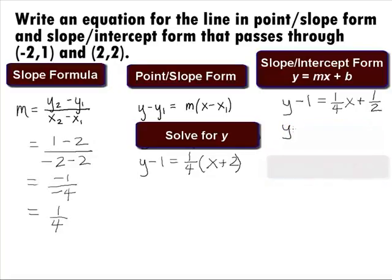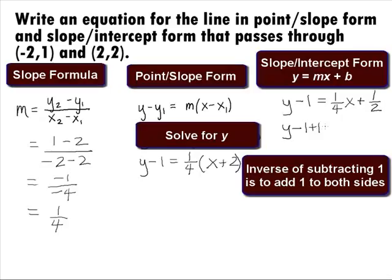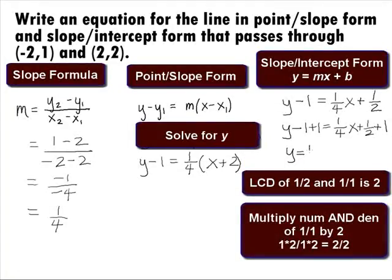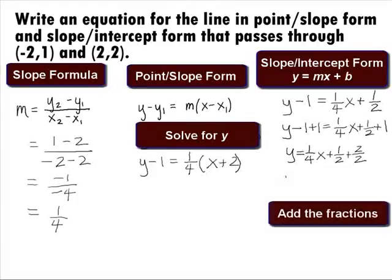Doing the inverse of subtracting 1, we want to add 1 to both sides, which will give us y minus 1 plus 1 equal to 1 fourth x plus 1 half plus 1. Rewriting the 1 as 2 over 2 so that we have a common denominator, we get y equal to 1 fourth x plus 1 half plus 2 over 2. Adding the 1 over 2 plus 2 over 2, we get y equal to 1 fourth x plus 3 halves.